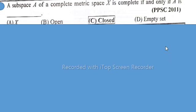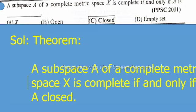The complete statement is: A subspace A of a complete metric space X is complete if and only if A is... Solution: Theorem - A subspace A of a complete metric space X is complete if and only if A is closed. So option C is correct.